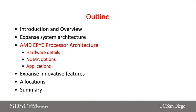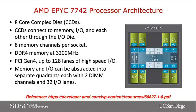Let's look at the AMD EPYC processor architecture. It has eight core complex dies. Each CCD has eight cores essentially. There is an IODI in the center at 14 nanometers, while the CCDs are at 7 nanometers. This innovative design lets them pack in a lot more cores. Through the IODI, there are multiple ways of booting up this node in terms of NUMA domains.